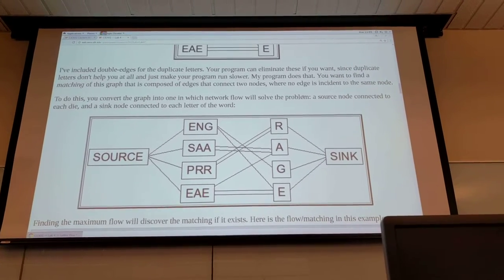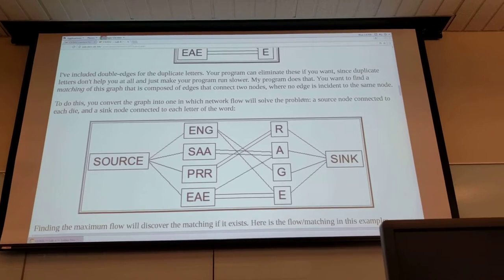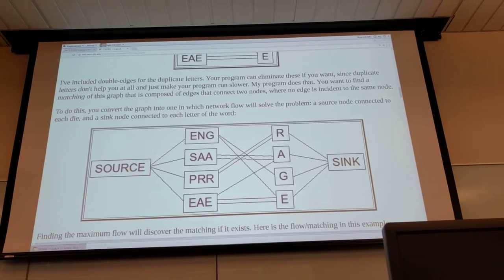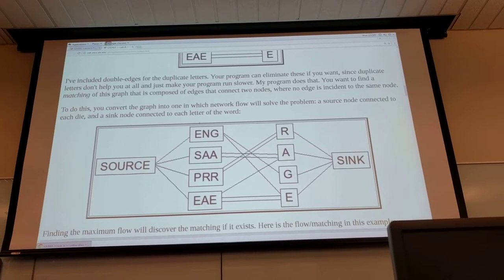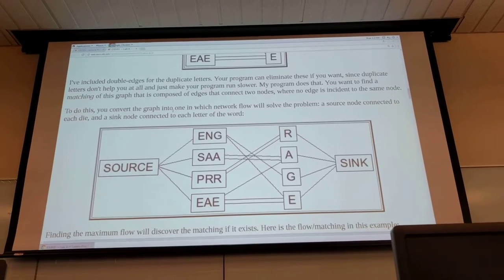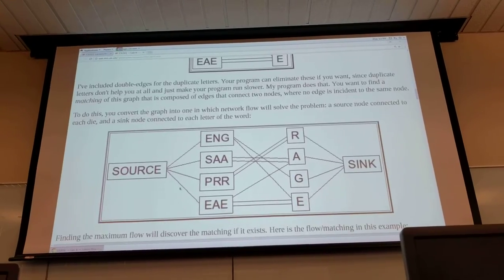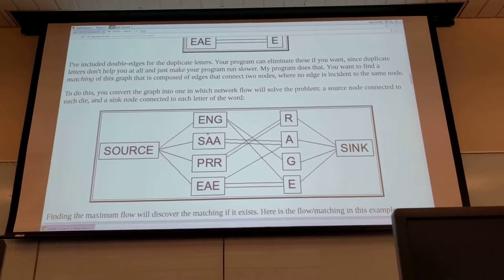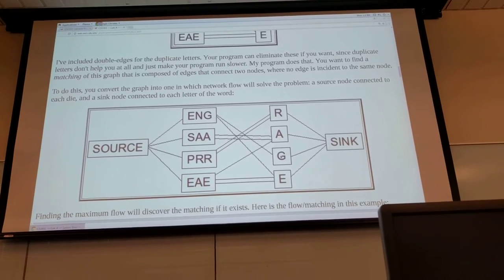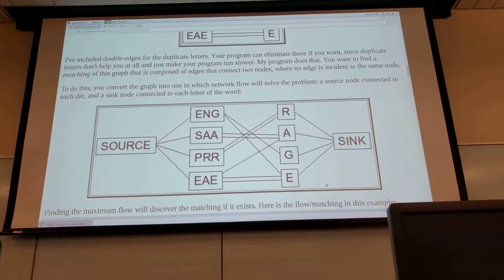So in order to determine whether or not you can find the matching of the die to the letter words, then you can do this with a network flow problem. If you convert your bipartite graph into a network problem you can add a source that's connected to the die and then a sink that's connected to the letters of the word.